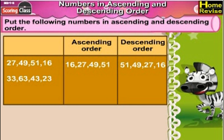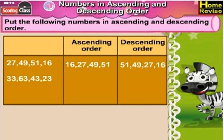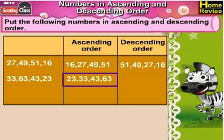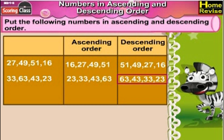Next set: 33, 63, 43, 23. The ascending order would be 23, 33, 43, 63. The descending order would be 63, 43, 33, 23.